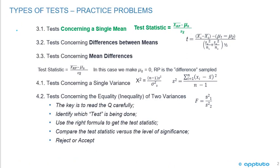In this LOS we're going to look at tests concerning a single mean. For these next few LOS I'm always going to start showing the different tests as we roll through them, because the key for success on these types of questions is to read the question very carefully. You need to identify which test is being done, use the right formula to get the test statistic, and then compare the test statistic versus the level of significance, and then you're going to accept or reject.